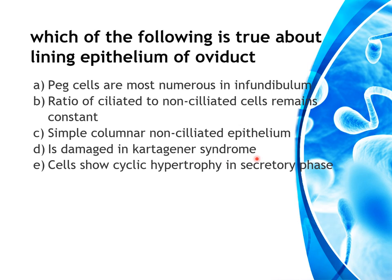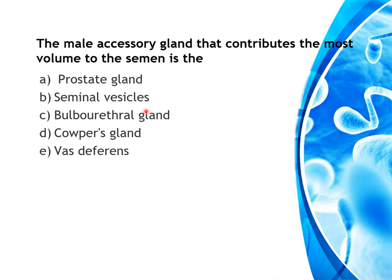The male accessory sex gland that contributes the most volume to semen — options are prostate, seminal vesicle, bulbourethral gland, and vas deferens. The answer is seminal vesicles.